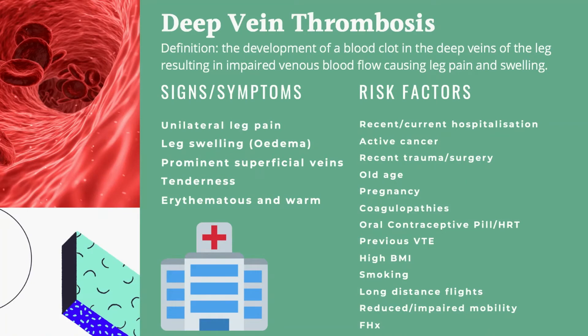So it's really no surprise that the patient is suspected to have DVT. Although the classical definition is the development of a clot in the deep veins of the leg, it's also important to be aware that DVTs aren't limited to the lower leg. They can also affect veins in the pelvis, thigh, abdomen, etc.